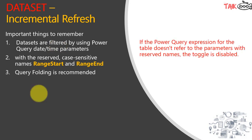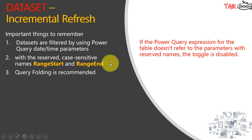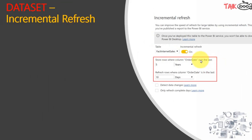If the Power Query expression for the table doesn't refer to the parameters with the reserved names RangeStart and RangeEnd, the toggle is disabled. This is the toggle of incremental refresh — it will be disabled and you won't be able to enable this option if RangeStart and RangeEnd are not available in the parameters.